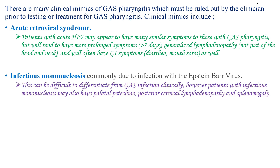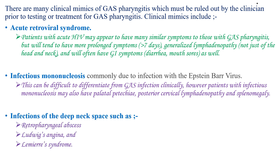Another mimic is infectious mononucleosis, commonly due to infection with Epstein-Barr virus. This can be difficult to differentiate from group A streptococcal infection; however, patients with infectious mononucleosis may also have palatal petechiae, posterior cervical lymphadenopathy, and splenomegaly. There are also differentials such as deep neck space infections, including retropharyngeal abscess, Ludwig's angina, and Lemierre syndrome.